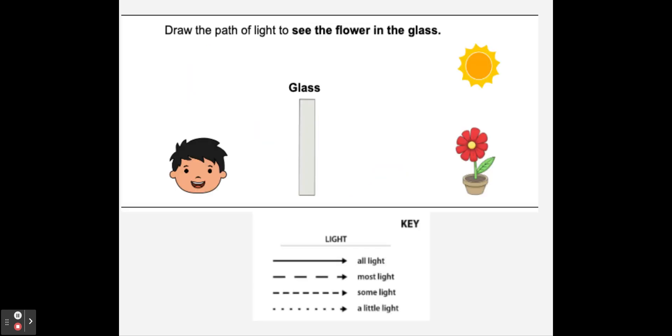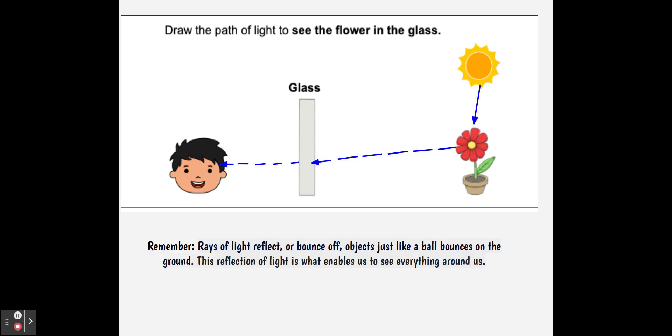Okay, the next one. Draw the path of light to see the flower in the glass. So pause the video. Okay, so if you notice, all of the light goes to the flower, some of the light goes to the glass, and then the glass causes it to change because of the impurities in the glass. And some of the light goes to the eyes.